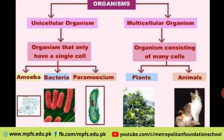Point number four: in unicellular organisms, body organization is very simple. In multicellular organisms, body organization is complex — it is not simple but complicated.